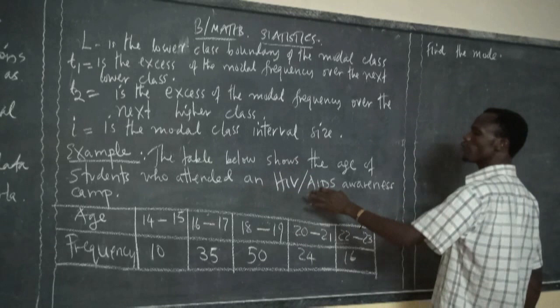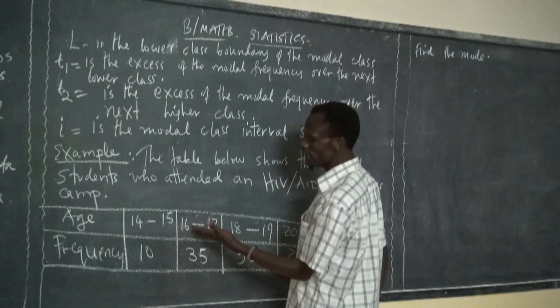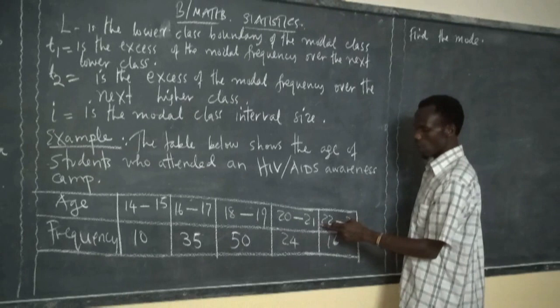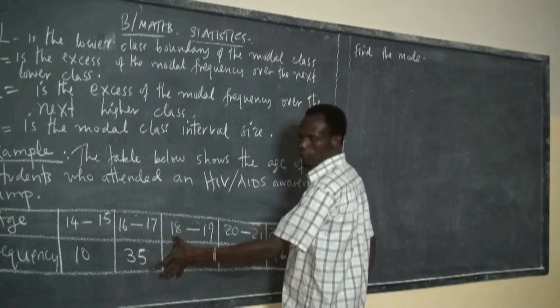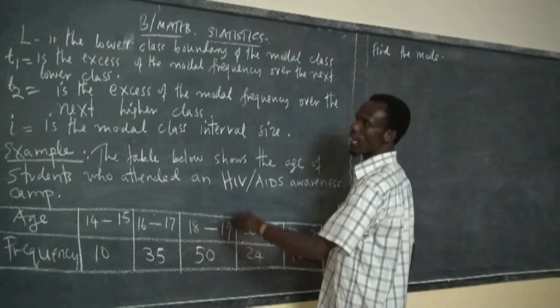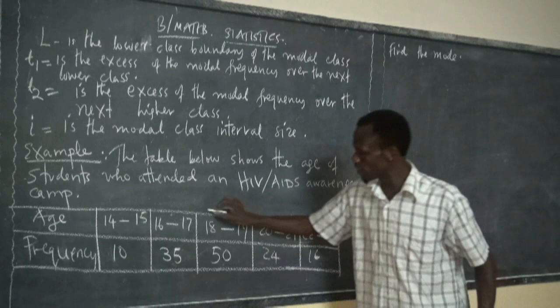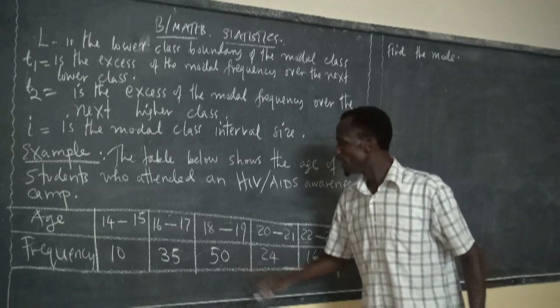The table below shows the ages of students who attended an HIV/AIDS awareness camp. Ages 14–15: 10 students; 16–17: 35 students; 18–19: 50 students; 20–21: 24 students; 22–23: 16 students. Out of this table, you look at the class interval — the modal class — which has the highest frequency. The modal class is 18 to 19, because 50 students attended.